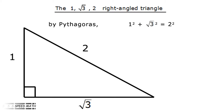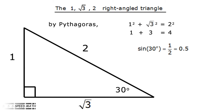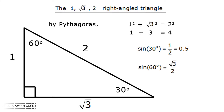You can see by using Pythagoras how the numbers work: 1 squared plus root 3 squared equals 2 squared — in other words 1 plus 3 equals 4. Now to the angles: sine 30 degrees equals 1 divided by 2, which gives 0.5. Sine 60 degrees equals root 3 over 2, which is 1.732 divided by 2, or 0.8660.